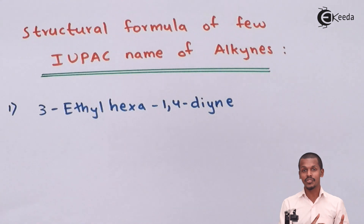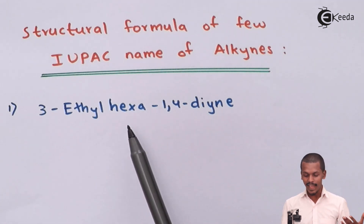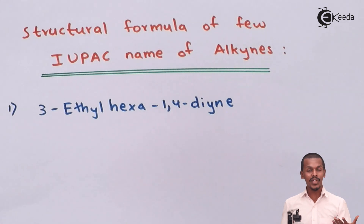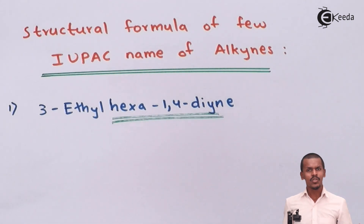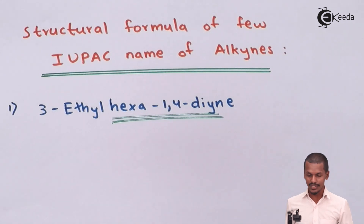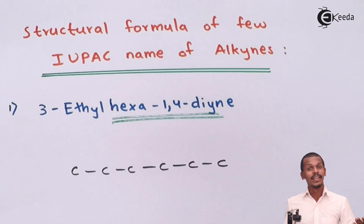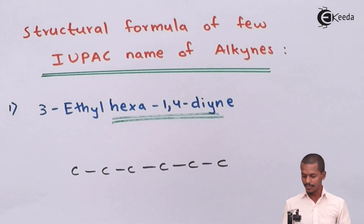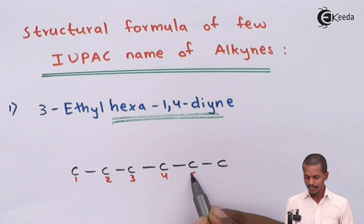We are going to draw the structural formula of the IUPAC name provided to us. The first example is 3-ethyl-hexa-1,4-diene. The first thing is to observe the parent chain. The suffix here is hexa-1,4-diene, so in terms of alkane it is hexane, which consists of 6 carbon atoms arranged in a continuous long chain. We write these 6 carbon atoms and number them 1st, 2nd, 3rd, 4th, 5th, and 6th.